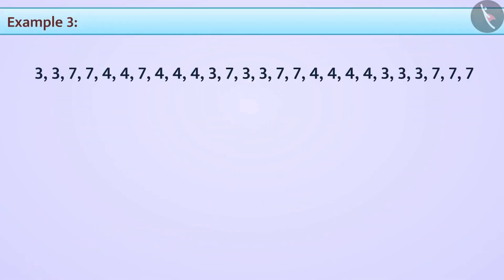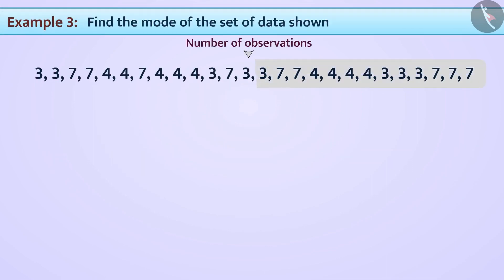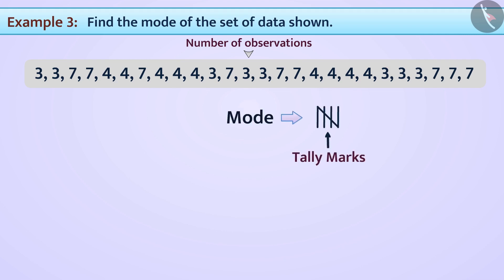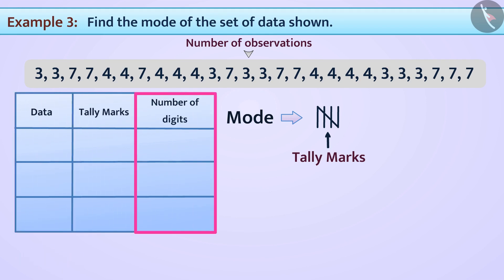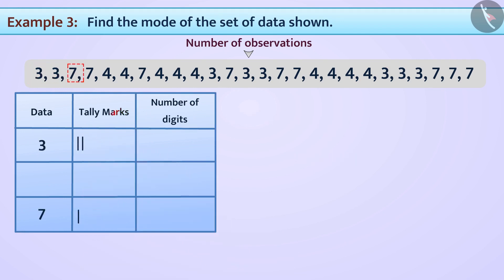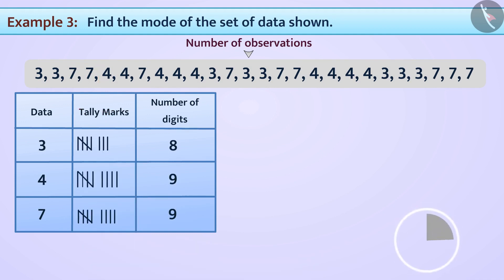Let us look at an example for finding the mode of a set of data. As there are many observations, we will use tally marks. We create a table with data in the first column, tally marks in the second, and the number of digits in the third. Going from left to right, we make tally marks. Looking at the table, both 7 and 4 have appeared most often — 9 times each. Hence, 7 and 4 are the modes for the provided data set.